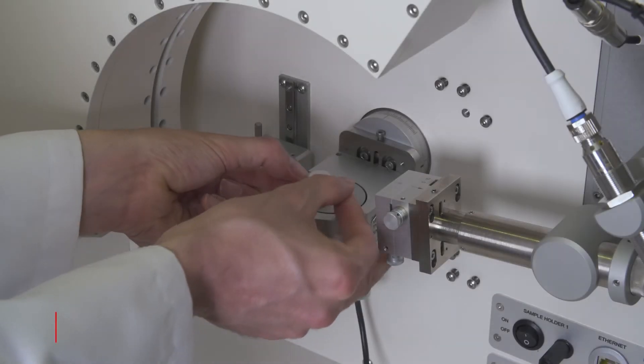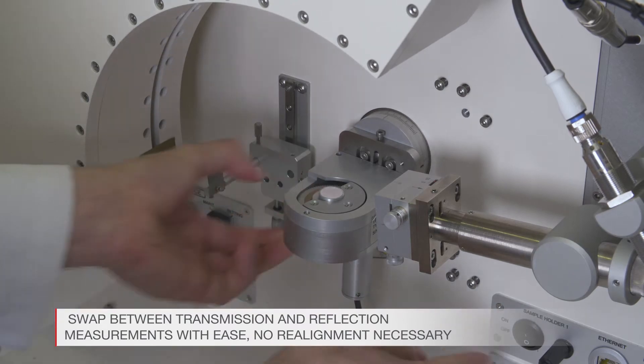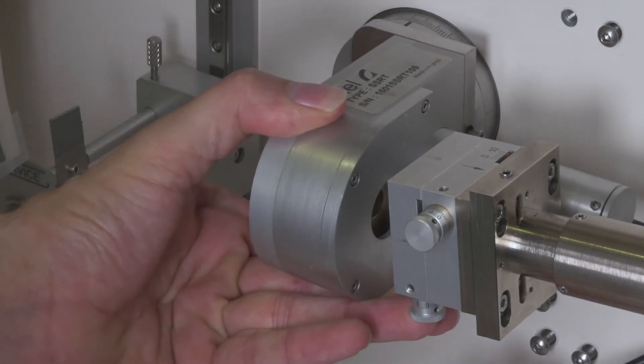You can easily swap between transmission and reflection measurements. No realignment necessary. One sample holder to do it all, including spinning.